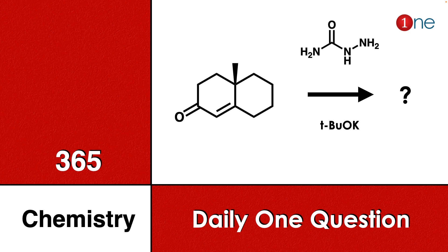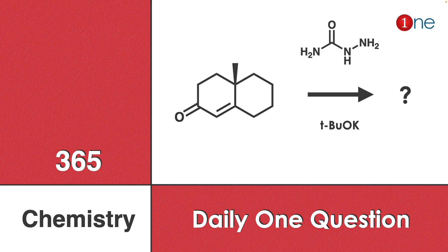Welcome to One Chemistry. This is the 365 Chemistry Series — one daily question for you. Here you have a cyclic conjugated ketone with a methyl group above the plane. You are reacting it with an amide that has an NH2 side and a hydrogen, and you are using a base. You have to guess what the final product will be.